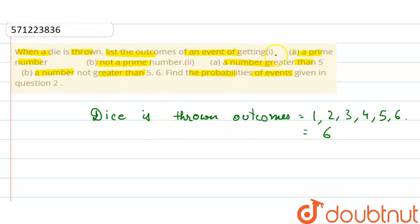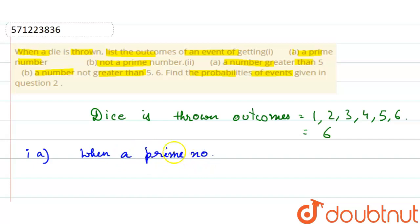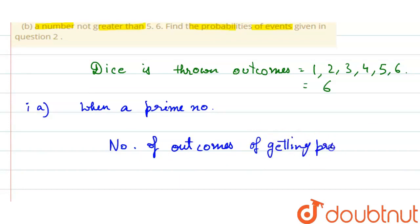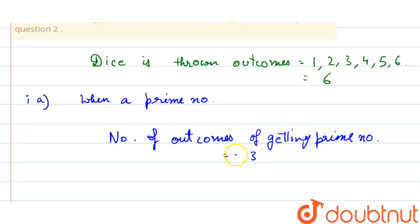If we look at the first part, A — a prime number. The outcomes of getting a prime number will be 2, 3, or 5. So we have a total of 3 outcomes.